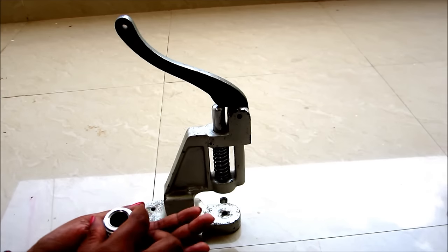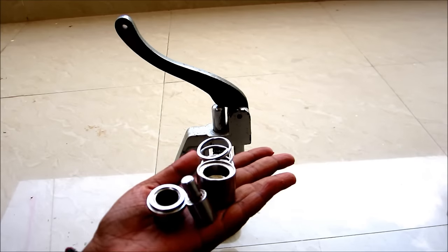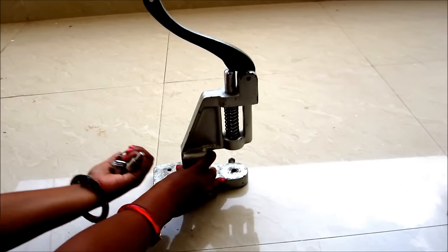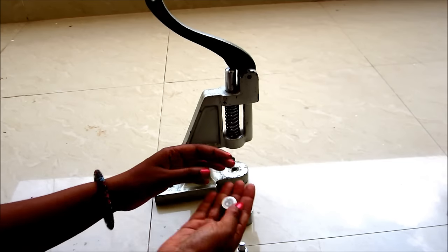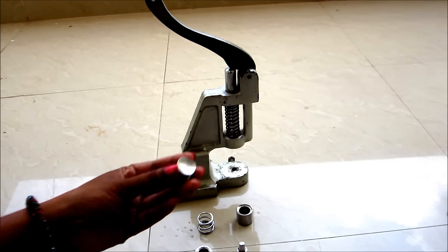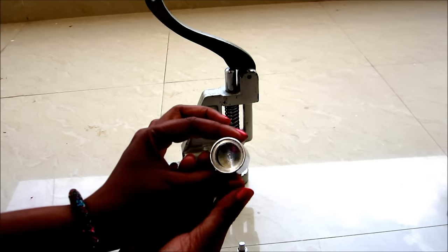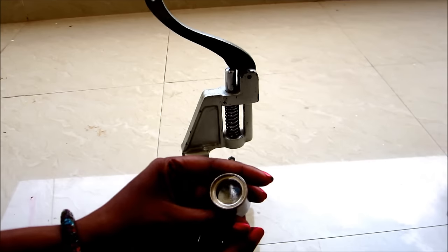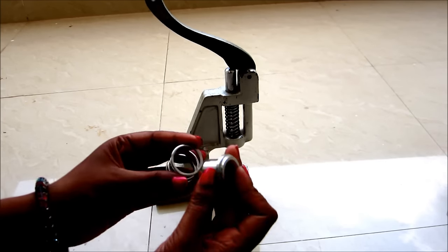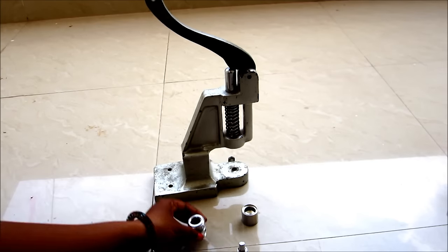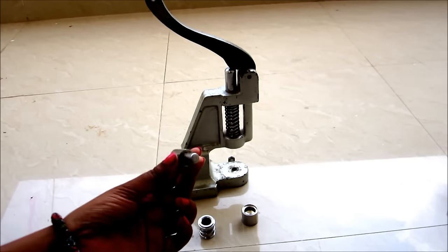As I said, this machine is having two sets of buttons with five units each, and this size is 13. This mold is used for the top of the button, that means we'll insert the top of the button in this, and down it is connected with this spring.